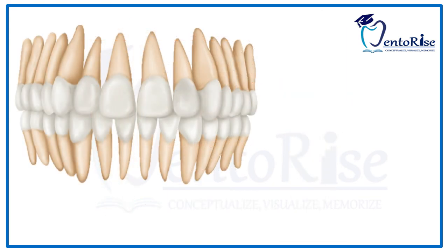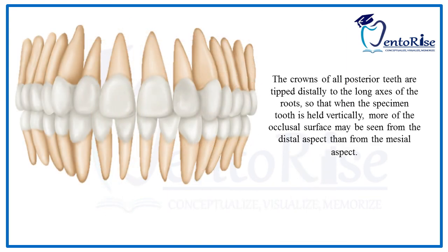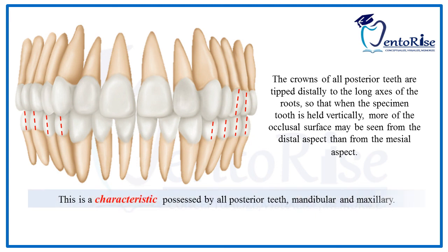Also, the crowns of all posterior teeth are tipped distally to the long axis of the roots, so that when the specimen is held vertically, more of the occlusal surface may be seen from the distal aspect than from the mesial aspect. This is a characteristic feature possessed by all posterior teeth, be it mandibular or maxillary.